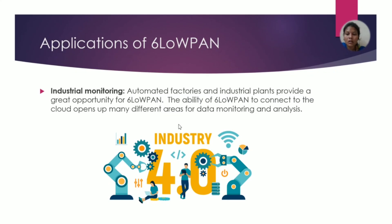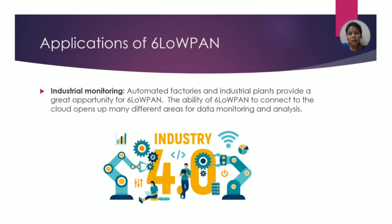Finally, 6LoWPAN is used to communicate between high-power devices and low-power devices. The edge router is used on the high-power device side, and the low-power device communicates with the router. The data is handled through the H-router. 6LoWPAN uses an adapter layer, and with IPv6, the physical layer is used in the data link layer. This is the 6LoWPAN definition and how 6LoWPAN works.